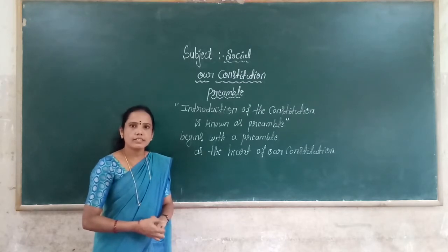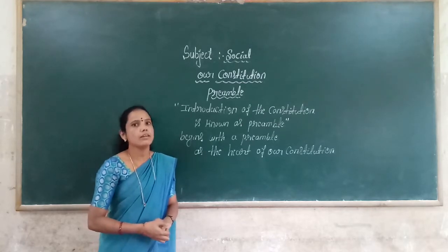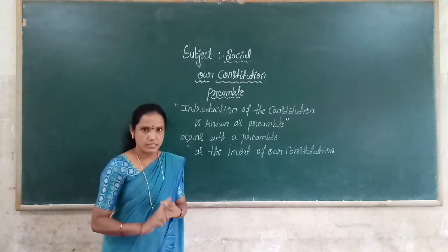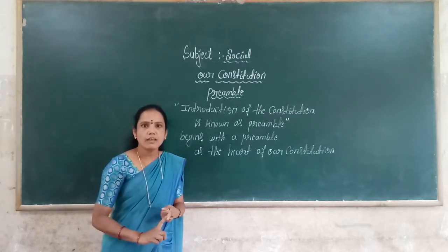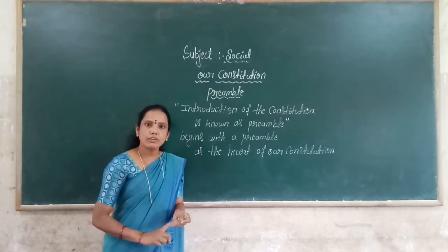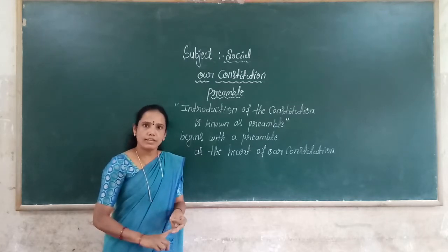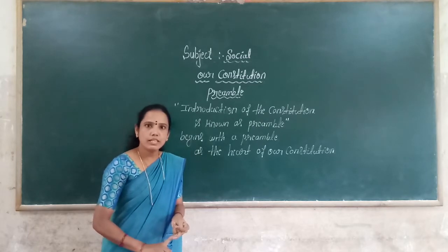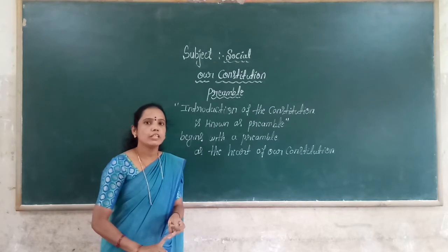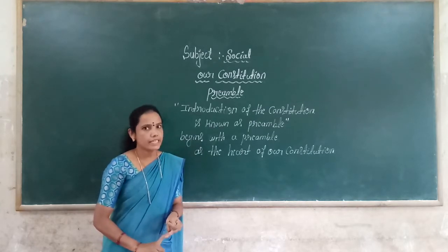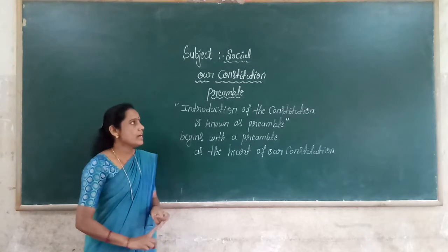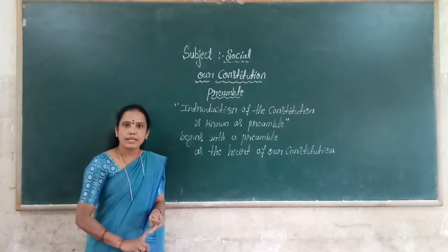Which are the ideologies we can point in our preamble? First one is justice. Second one is freedom. Third one is equality. Fourth one is fraternity. And fifth one is national integrity. These are all ideologies represented in our preamble.